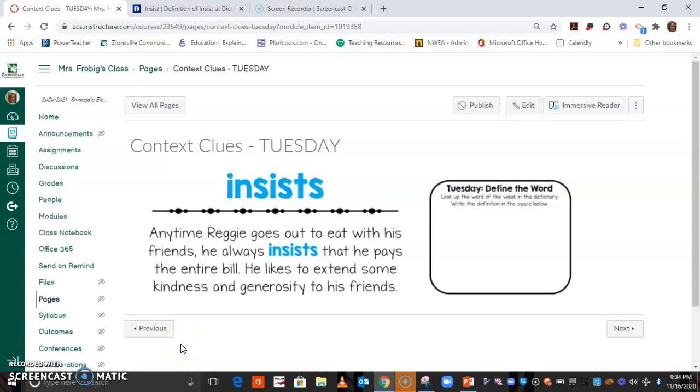Good morning. Let's go ahead and talk about context clues for Tuesday. The word for this week is insists. Yesterday we talked about how this is an example of an inferencing context clue because it doesn't just tell you exactly what it is. You have to kind of read between the lines a little bit and use some of your background knowledge to figure out what it means.